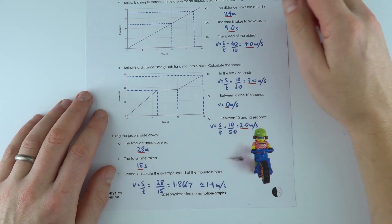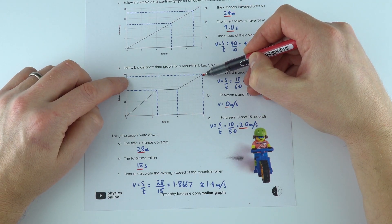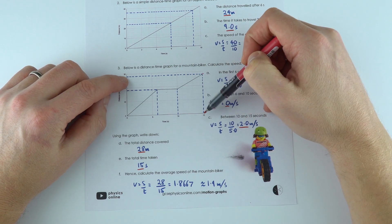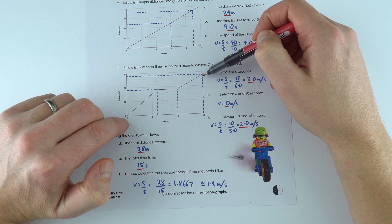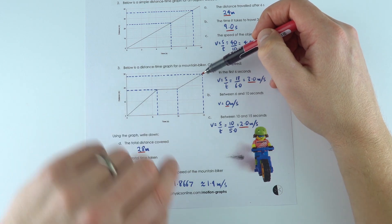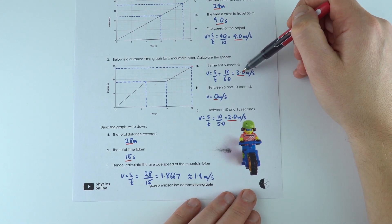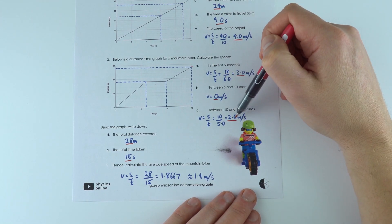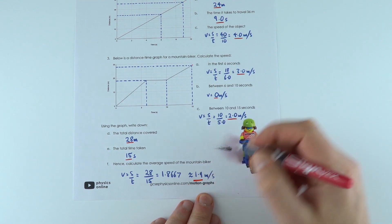Now the total distance traveled is going to be the value of the biggest distance up here, which is 28. The total time is 15, and that means the average speed was the total distance of 28 divided by the total time of 15 to get 1.9 meters per second. So even though they started at 3, they stopped, and then they carried on at 2, their average was 1.9 meters per second.